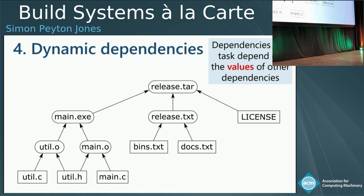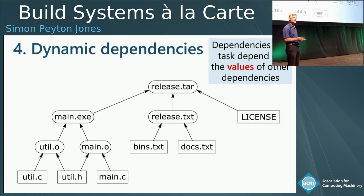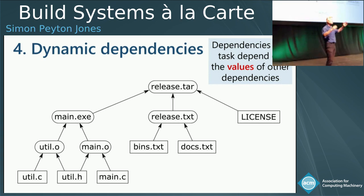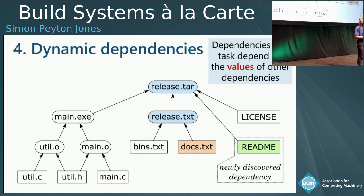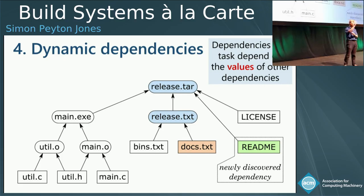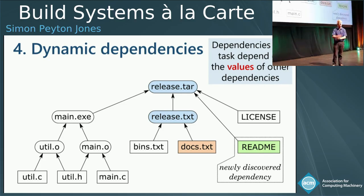The fourth good property is to support dynamic dependencies. Here's an example where main.exe is part of a release that has some documentation, but docs.txt is a manifest of things to be included. One day you add a line saying 'include readme', and the readme file now becomes a dependency of release.txt. The dependencies of each node in the dependency graph depend on values computed by other inputs — that's called dynamic dependencies.